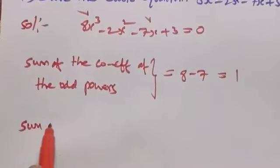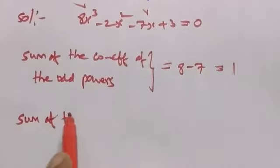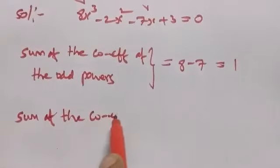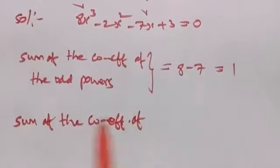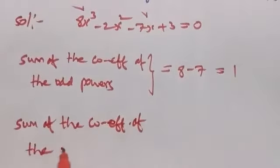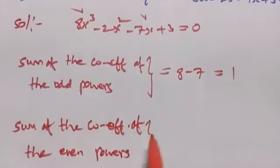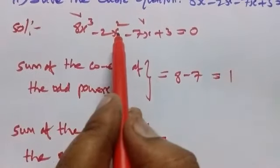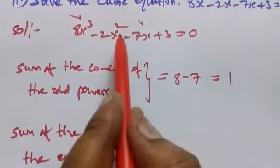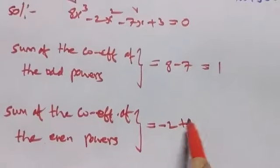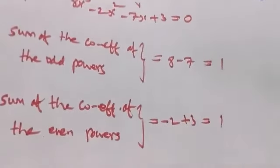Next, sum of the coefficients of the even powers. Even powers are x² and constant term. Coefficient of x² is -2, constant term is 3. So -2 + 3 = 1.